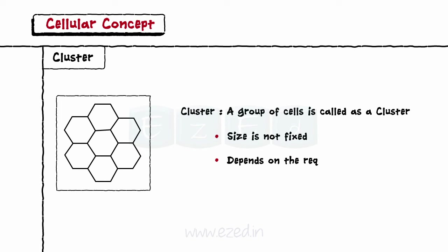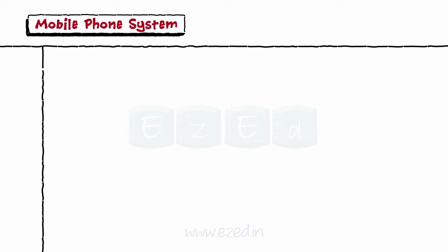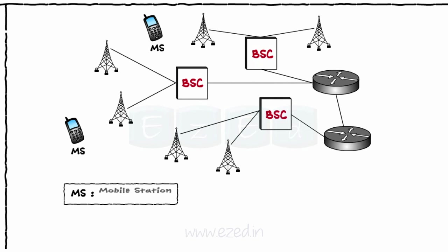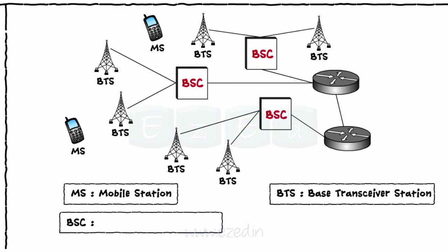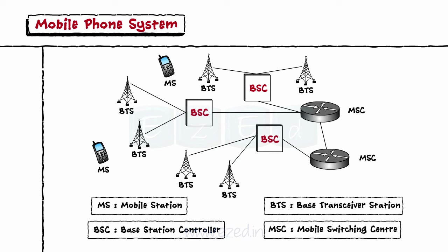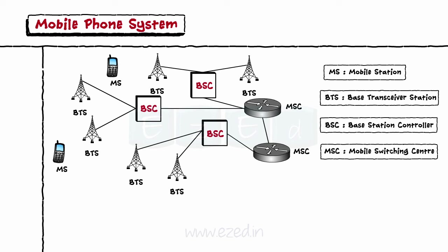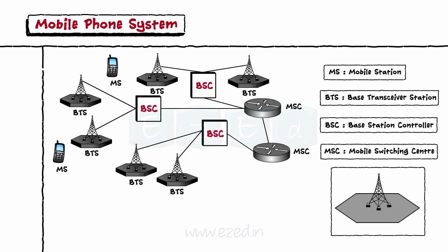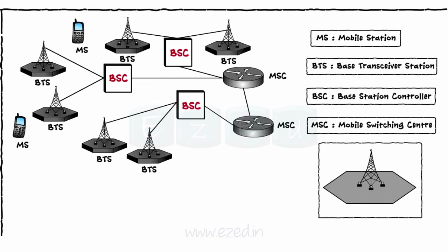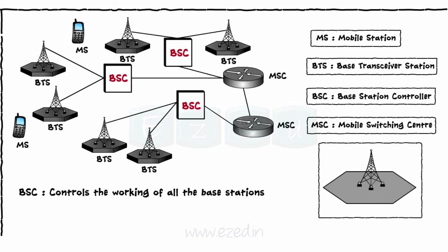Let's study the mobile phone system. The basic structure consists of MS, mobile station; BTS, base transceiver station; BSC, base station controller; and MSC, mobile switching center. MS is nothing but the mobile phone of a user. Every cell has its own base transceiver station at its center. Whenever a call is set up, the first signal is sent to the BTS of the cell, then to the BSC which controls all base stations, and then to the MSC, which is the master controller of the entire system.